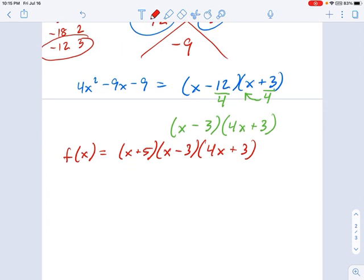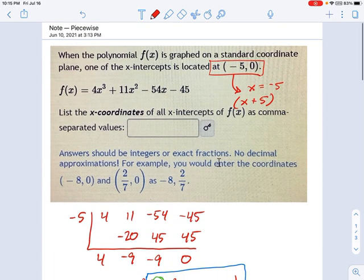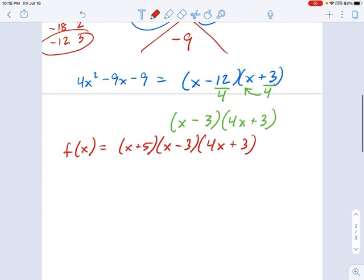So now that I have my factors, remember what the problem wanted. Let's go back here and look at this. It says it wants the x-coordinates of all x-intercepts as comma-separated values. And it gives you an example here. If we had x-intercepts at negative 8 and 2/7, it would want you to just say negative 8 comma 2/7. So here's my x-intercepts. I have negative 5. I have positive 3. And I have negative 3/4. And you would just enter those as comma-separated values just like that.